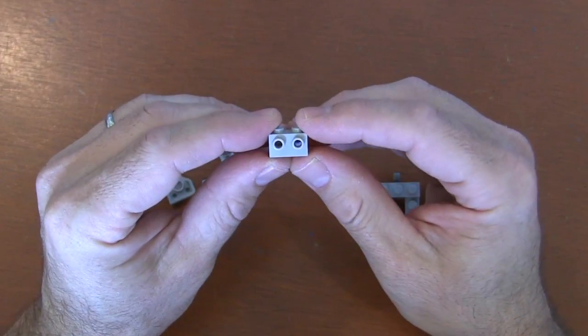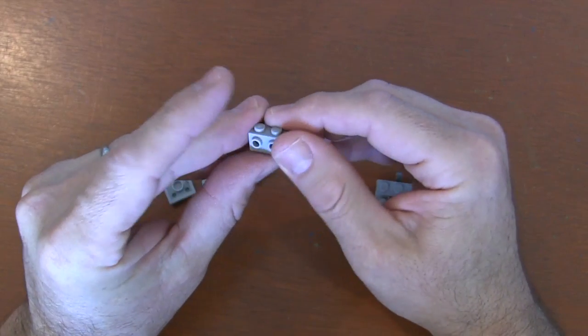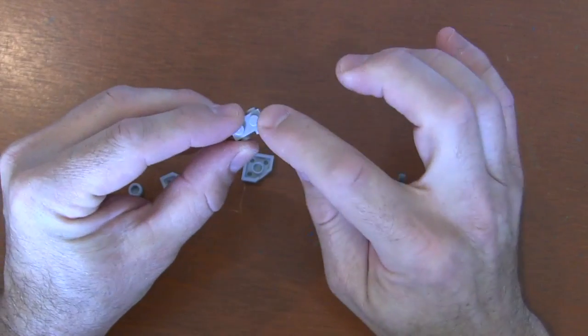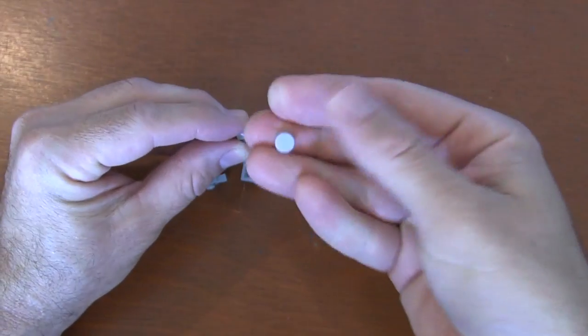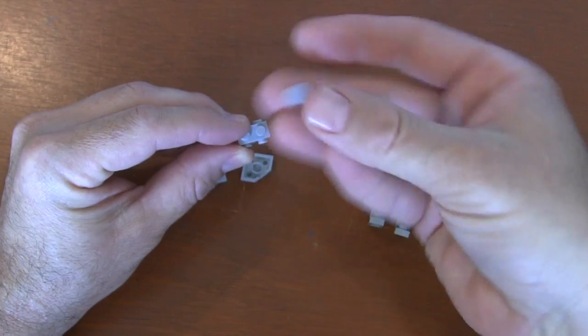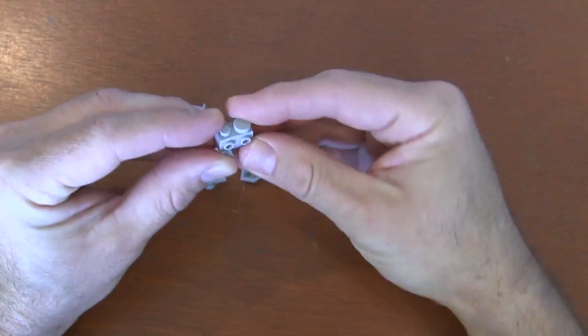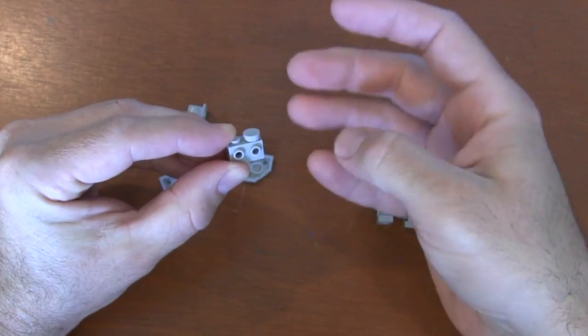For the head, we're going to start with a 1x2 brick with studs on both sides. On the top stud, whatever you choose is going to be the back. On that back stud, get a round 1x1 tile piece, put it on that back top stud, and that's the hatch to get in and out of our AT-ST.